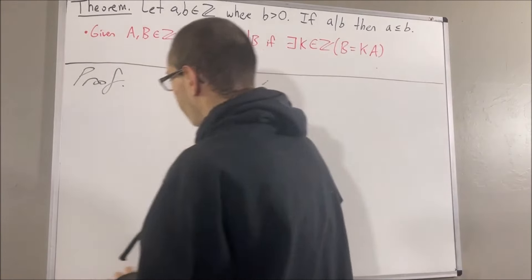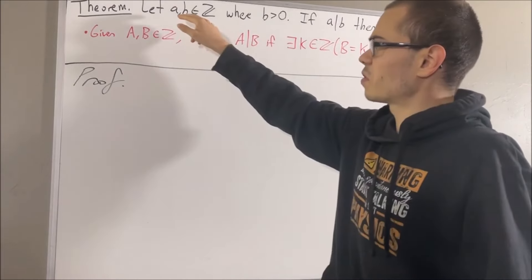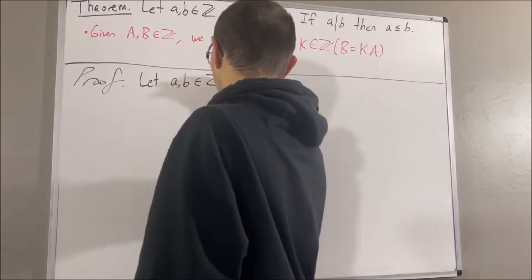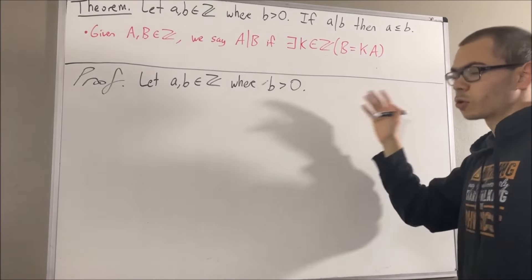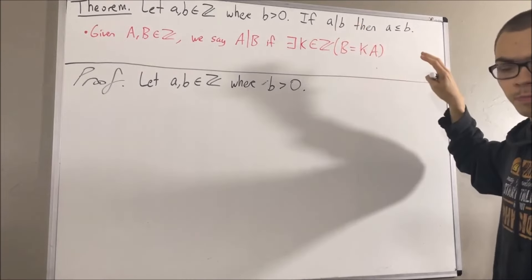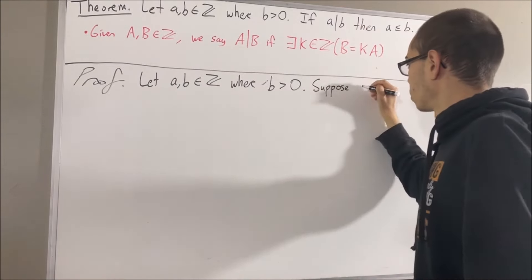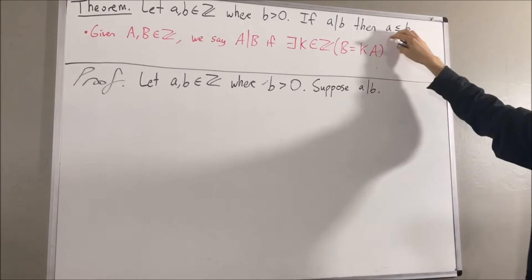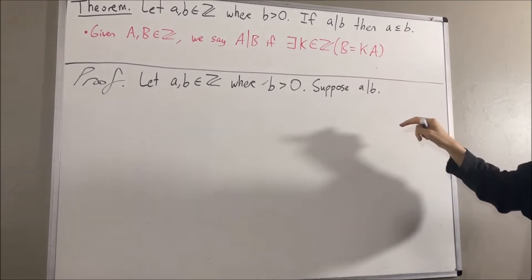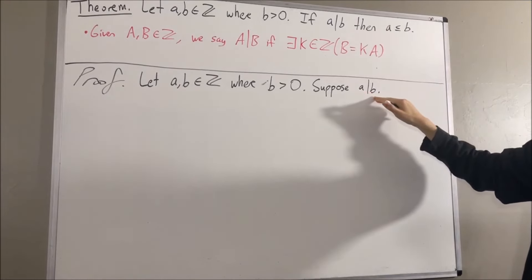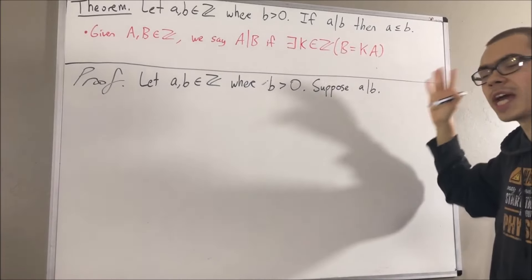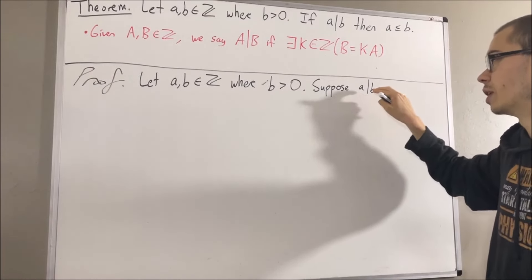Now let's get into the proof. To start out, let's give ourselves two integers a and b where b is greater than zero. Our goal is to prove: if a is a divisor of b, then a is less than or equal to b. So let's suppose that a is a divisor of b. Since a is a divisor of b, we know by definition that there is some integer k such that b is equal to ka.